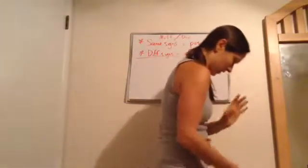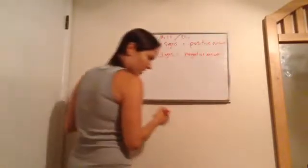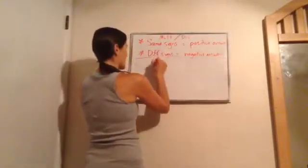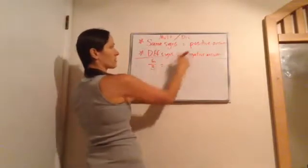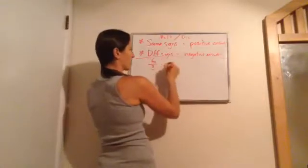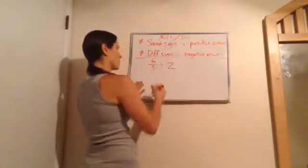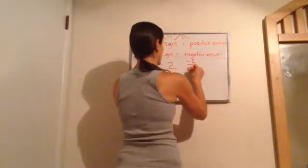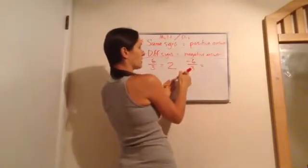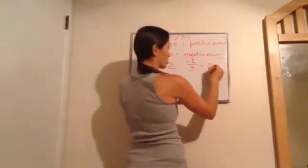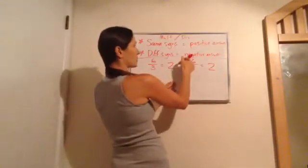Now let's move over to division. Let's do 6 divided by 3. We have same signs — positive and positive — so it's going to give us a positive answer. 6 divided by 3 is positive 2. What about negative 6 divided by 3? We have different signs, a negative and a positive, so 6 divided by 3 is 2, but because we have different signs, the answer is going to be negative 2.